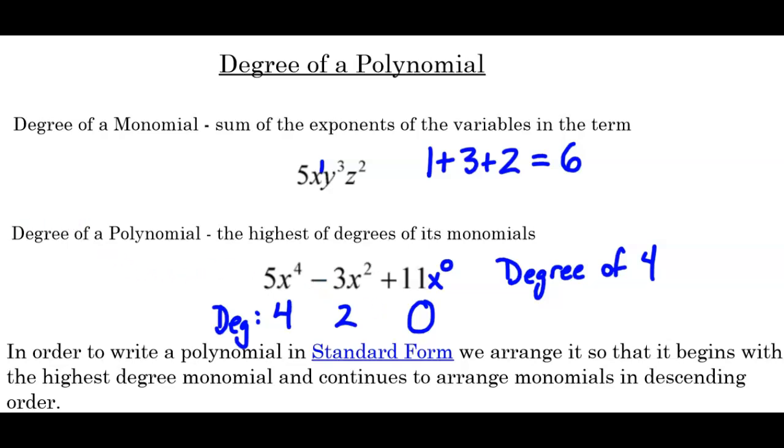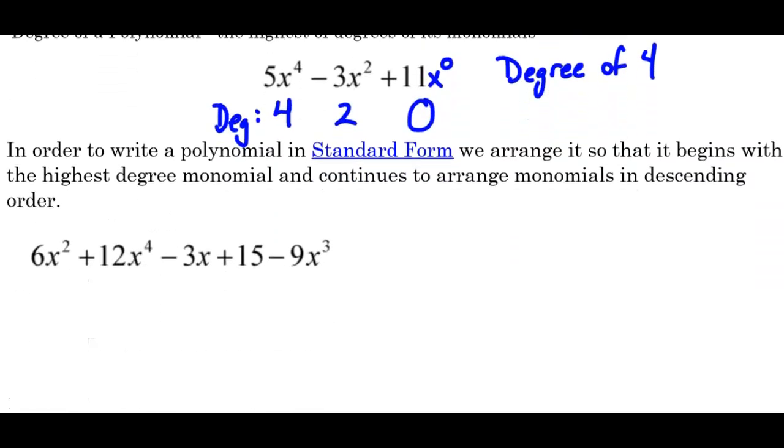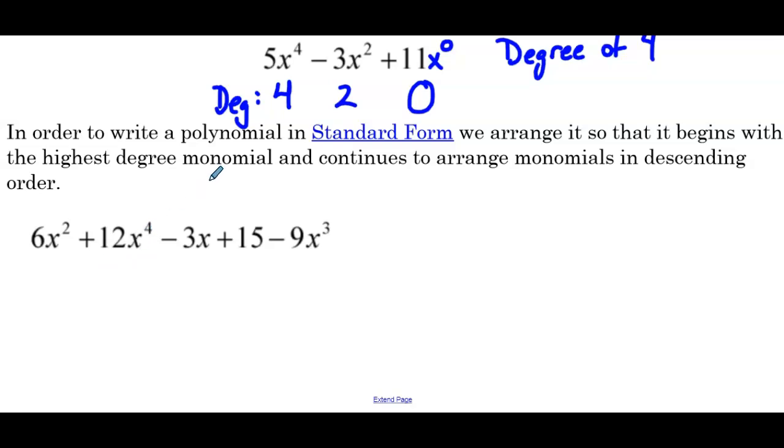Now, one way that knowing the degree of each term can be helpful is writing a polynomial in what we refer to as standard form. So in standard form, we arrange it so that it begins with the highest degree monomial and continues to arrange monomials in descending order. And this is just nice because if we're trying to compare answers, if everyone's written their answer in standard form, it's going to be really easy to check our work. Or if we're trying to add or subtract polynomials, having each of them written in standard form is just going to make our life easier for finding the like terms that we have to combine.